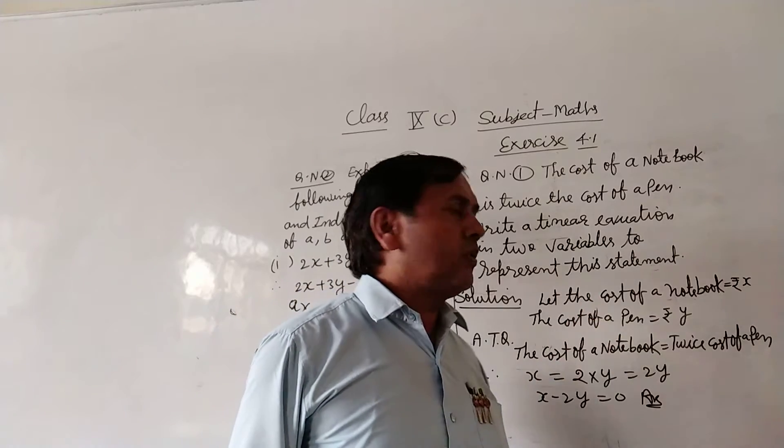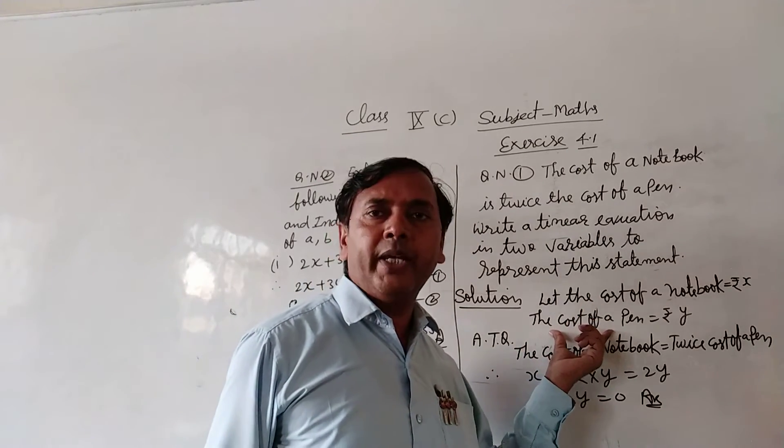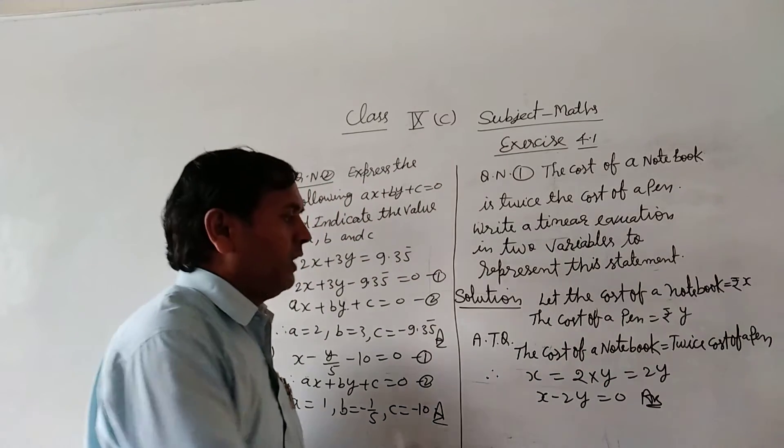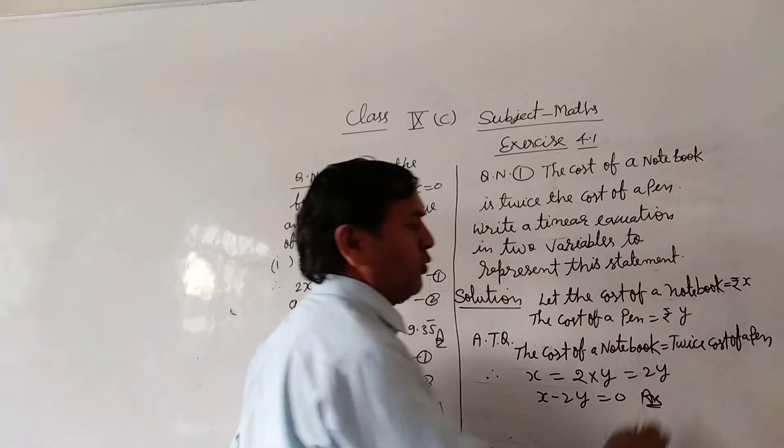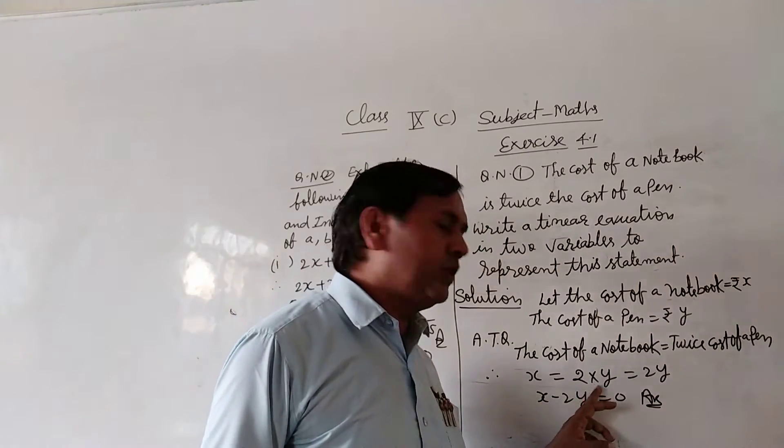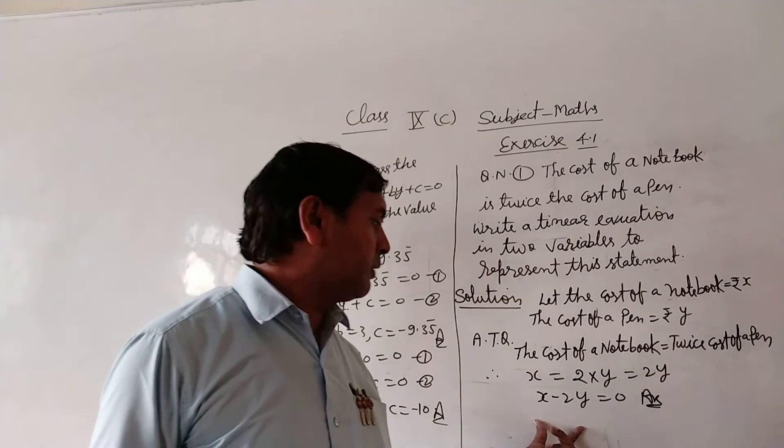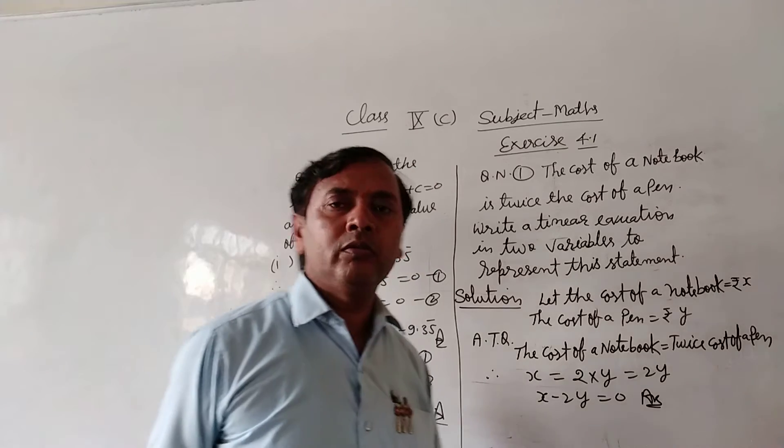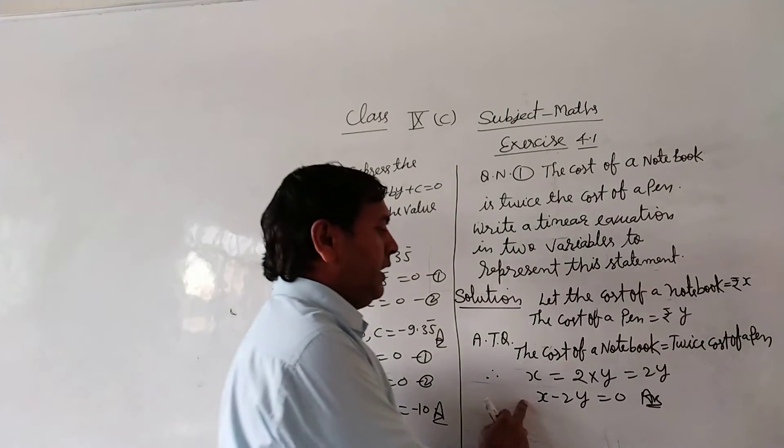So the cost of a notebook is x rupees, the cost of a pen is y rupees. The question states the cost of a notebook is equal to twice the cost of a pen, so x is equal to 2 into y, which is equal to 2y. Transferring, x minus 2y is equal to 0. This is a linear equation in two variables, x and y.